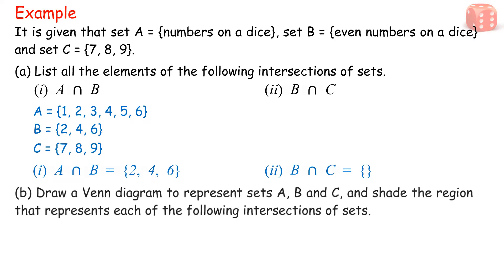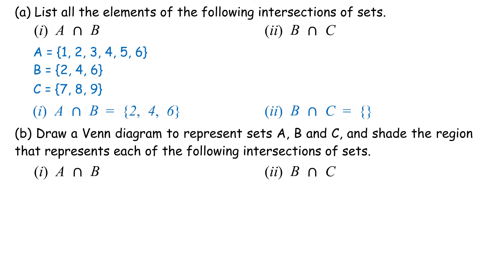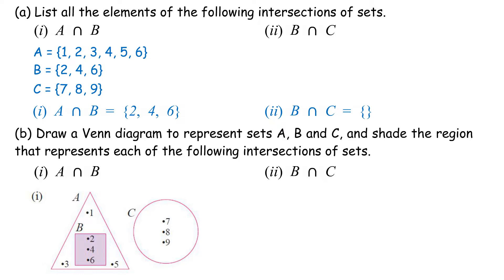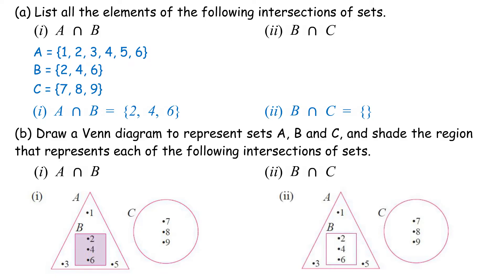Part B: Draw a Venn diagram to represent sets A, B, and C, and shade the region that represents each of the following intersections of sets. 1. A intersect B — all the elements of set B are in set A. 2. B intersect C — set B and set C do not have common elements.